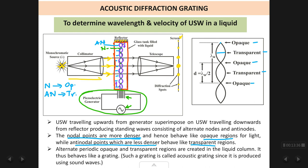Then we have a device called a collimator. The light coming from the source spreads out in different directions, but we require a parallel beam. The collimator makes the beam of light parallel — it has a convex lens with the source placed at its focus, so the rays coming out of the lens emerge as a parallel beam. This parallel beam is then made to pass through the liquid column which is behaving like a grating.